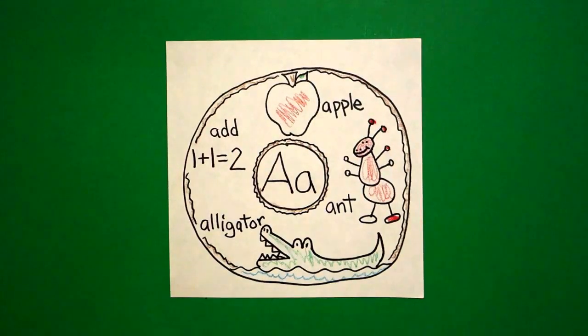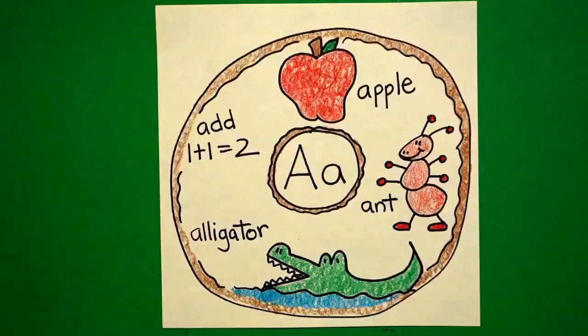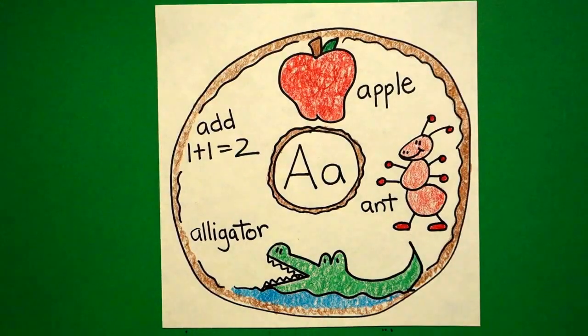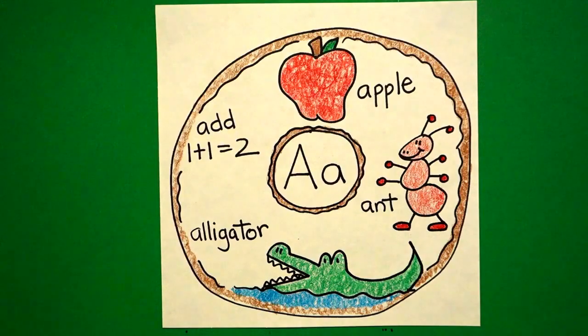Okay, let's see what this looks like all colored in. Okay, here's my alphabet donut, all colored in. Beginning sound, ah, for apple, ant, alligator, and add. Okay, bye-bye.